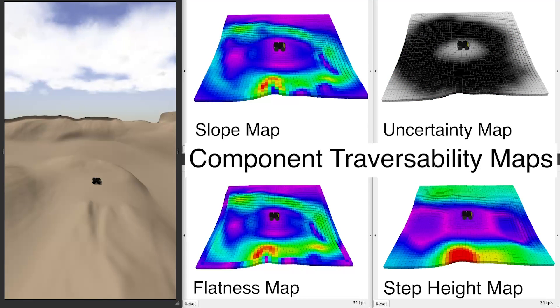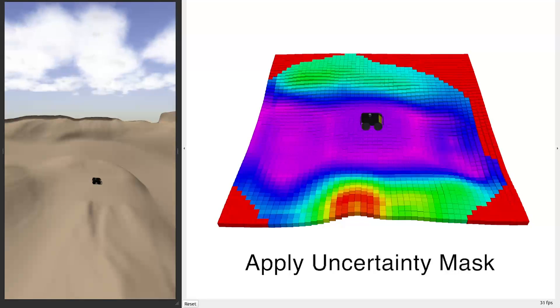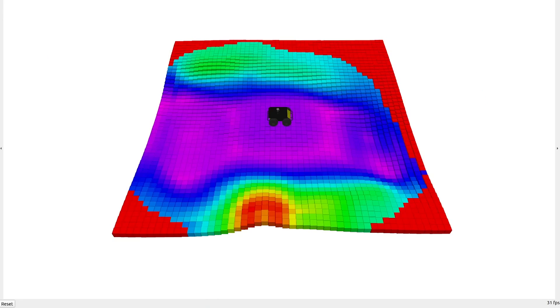Next, we used the GP maps and created flatness and step height local maps as components for our local traversability analysis. Using these components, we build our Traversability Map and apply the uncertainty as a mask, setting all values greater than a threshold to untraversable.